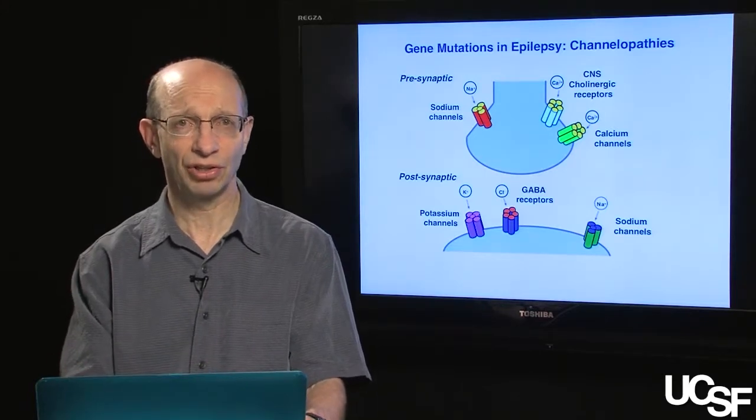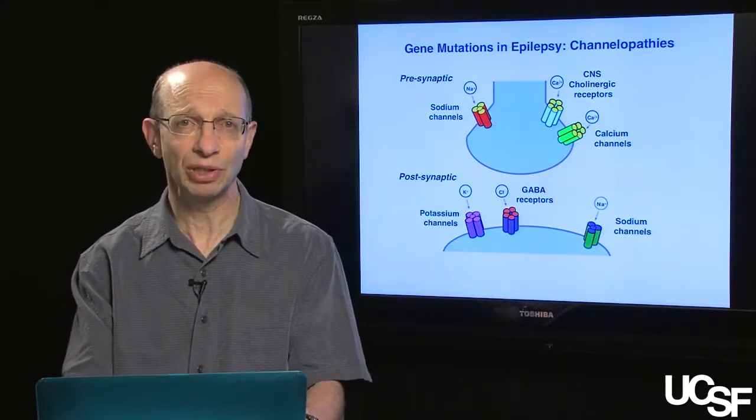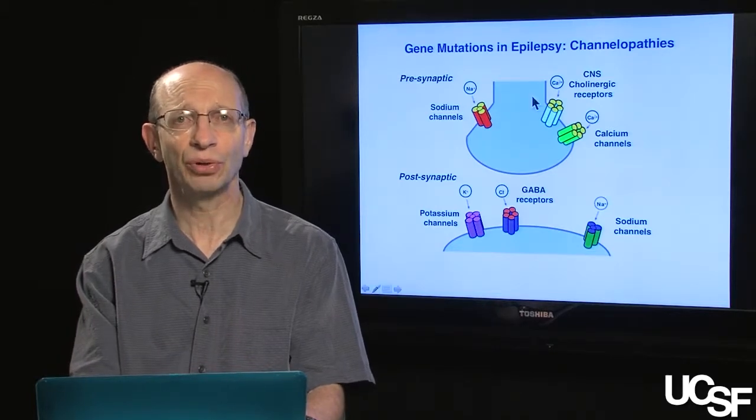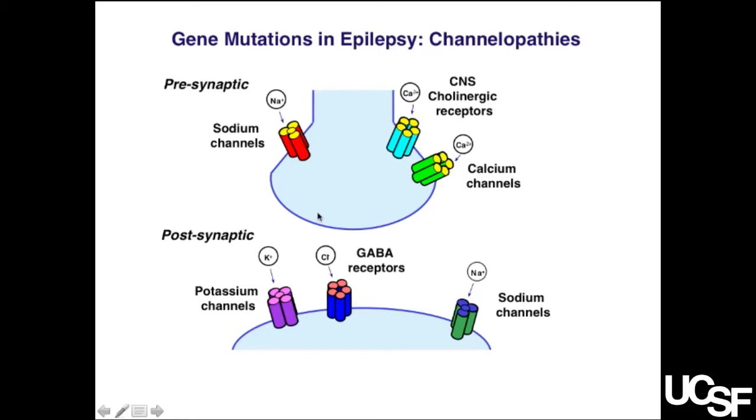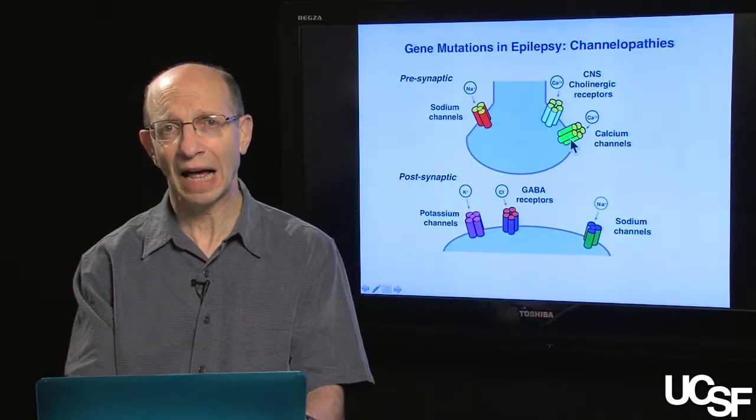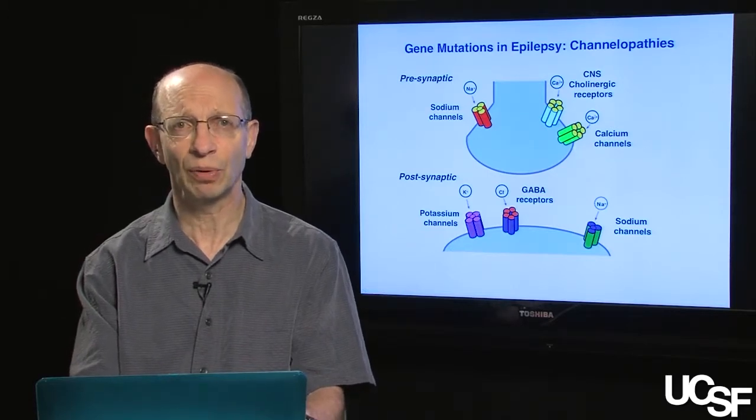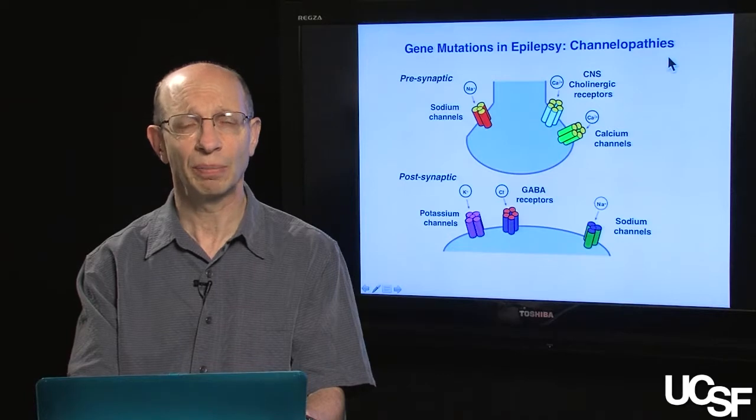This potassium channel mutation turns out to be part of a larger class of mutations that have been discovered in epilepsy referred to as channelopathies. This cartoon gives an example of the many different ion channels that exist both in the presynaptic and postsynaptic space. Mutations in essentially all of these—the sodium channel presynaptically, the sodium channel postsynaptically, cholinergic receptors in the central nervous system, potassium channels, GABA receptors, and calcium channels—there are other classes of molecules that are also affected in various forms of epilepsy, but the channelopathies represent the predominant form.